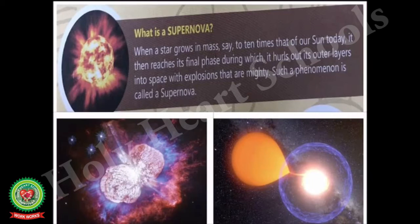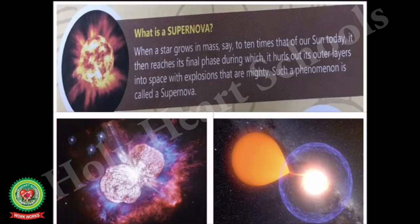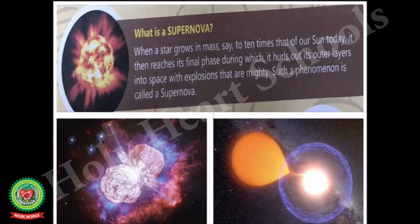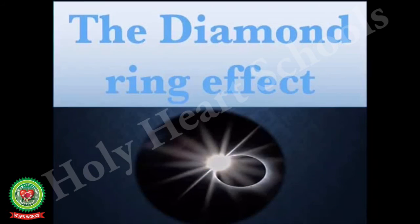The second type of supernova occurs at the end of a single star's lifetime. As the star runs out of nuclear fuel, some of its mass flows into its core, and eventually the core becomes so heavy that it cannot withstand its own gravitational force. The core will collapse, and this results in the giant explosion of a supernova.